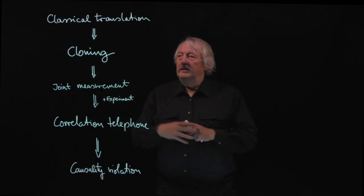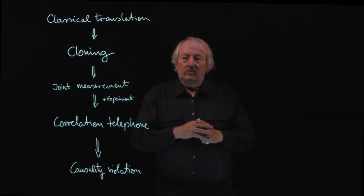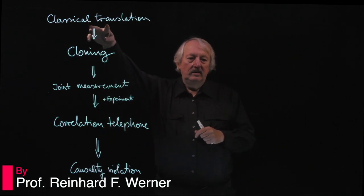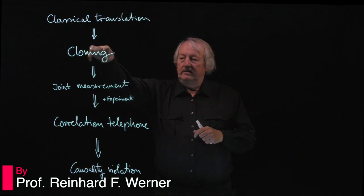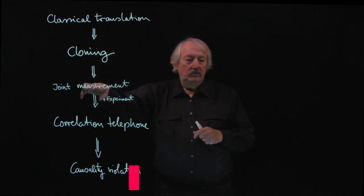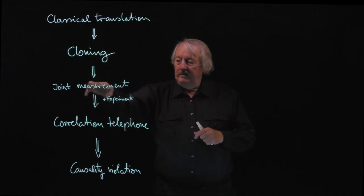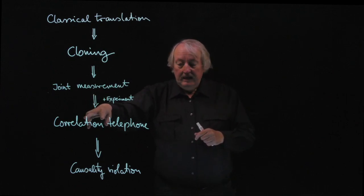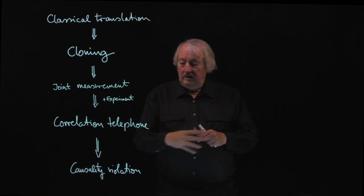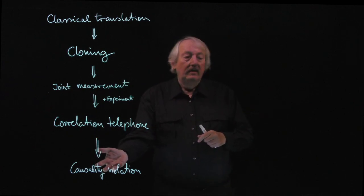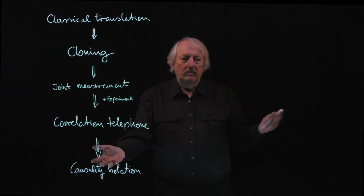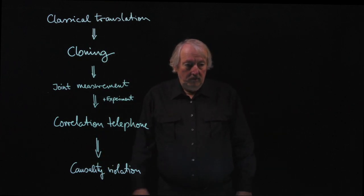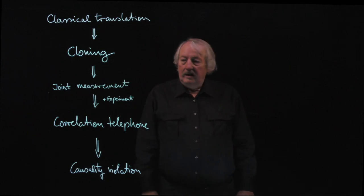So let me wrap up. Here are the impossible machines that I described, and there was this hierarchy: if you didn't have a classical translation, you can build a cloner out of that. If you have that, you have universal joint measurement, and if you have that, you can make a correlation telephone. That was the most complicated conclusion — simply a causality violation — and because we don't want that in our theory, and quantum mechanics actually doesn't have it, all these machines are impossible. That was the basic idea.